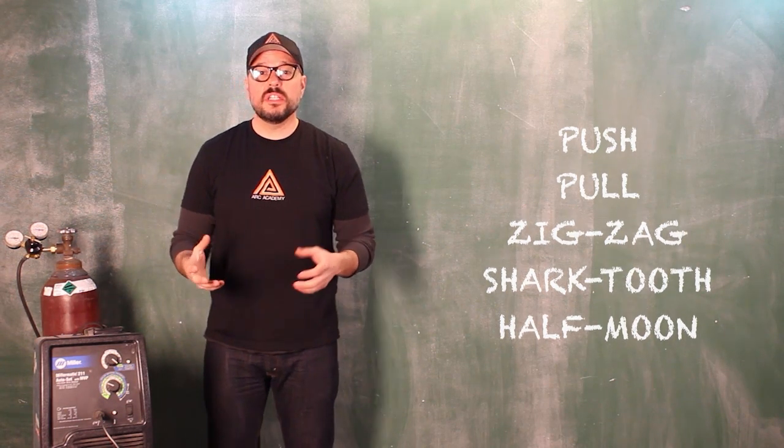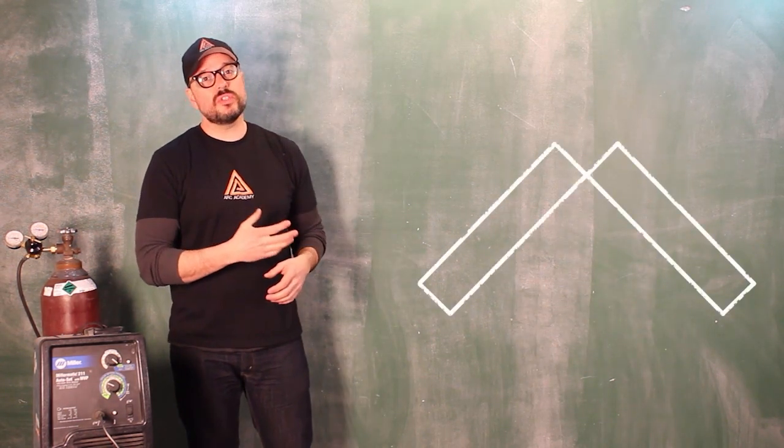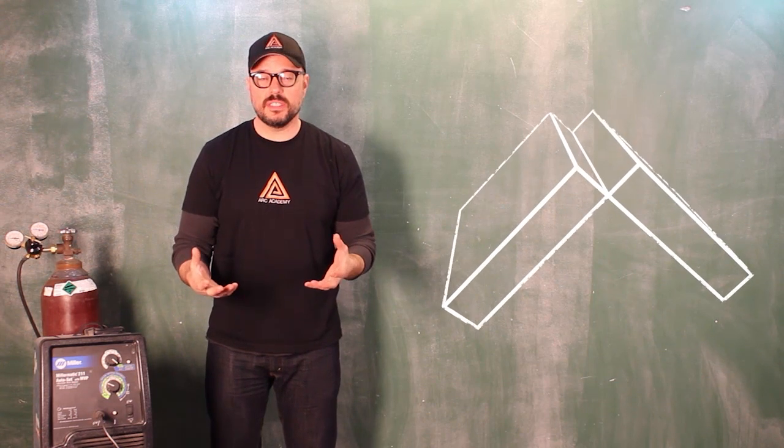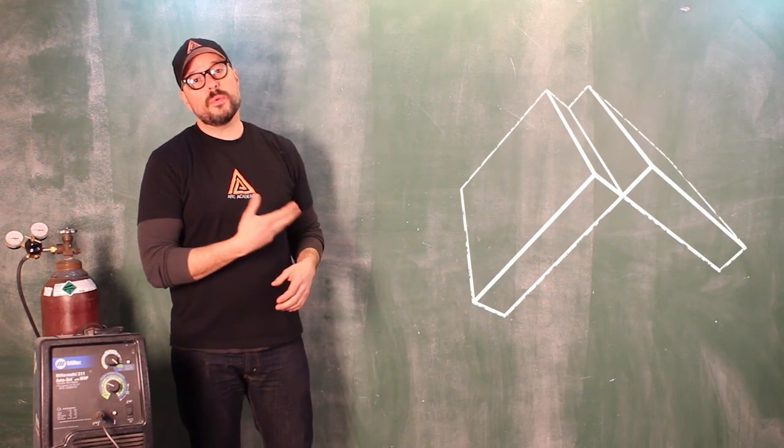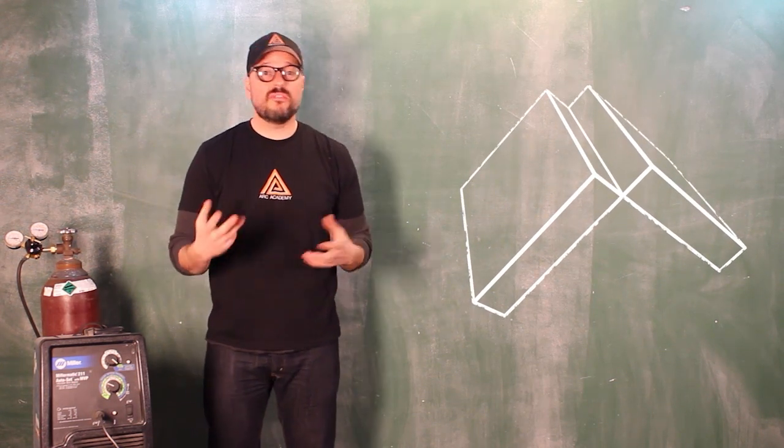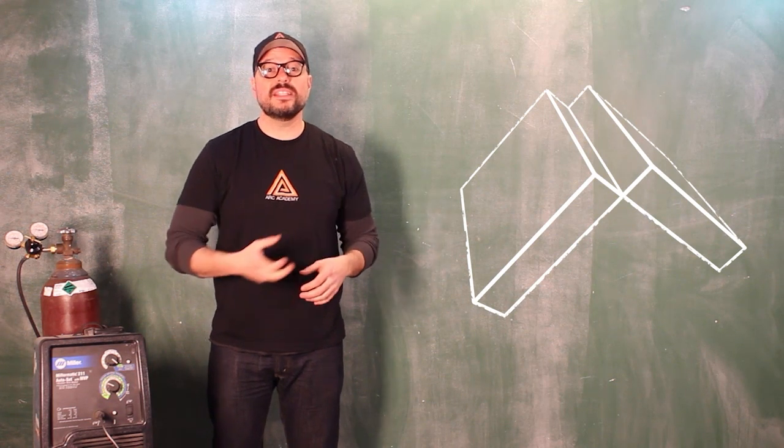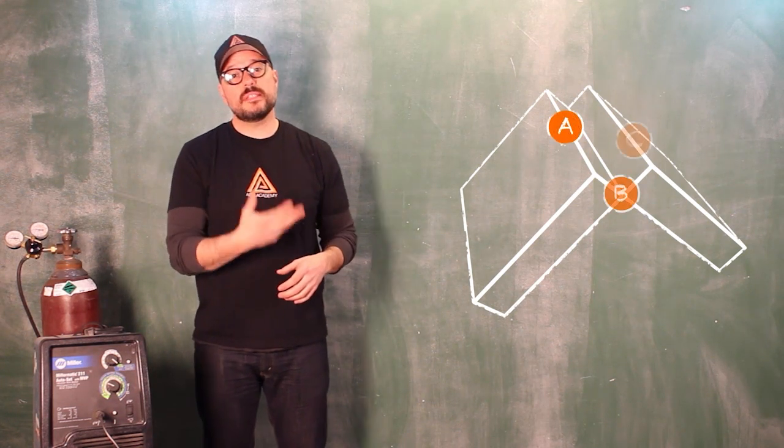Now, as you can see, just like the V-groove butt joints that you've already been practicing on, the outer open corner joint has three very distinct lines to follow as guides moving through the weld, A, B, and C.